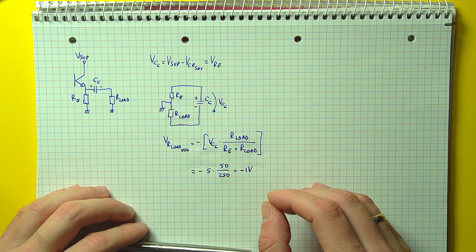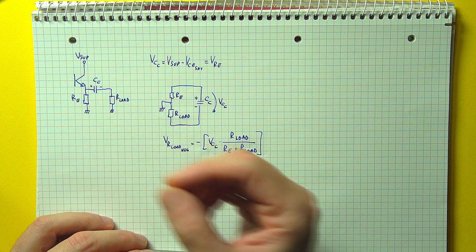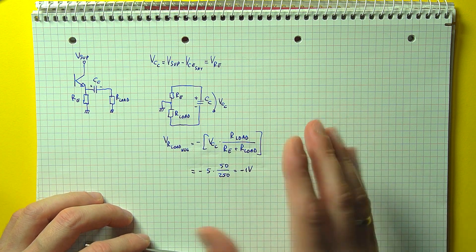Now you may be thinking, how do we optimize the output voltage swing then? We could decrease the emitter resistor, but that would just increase collector current and lower gain, so that's not really good.